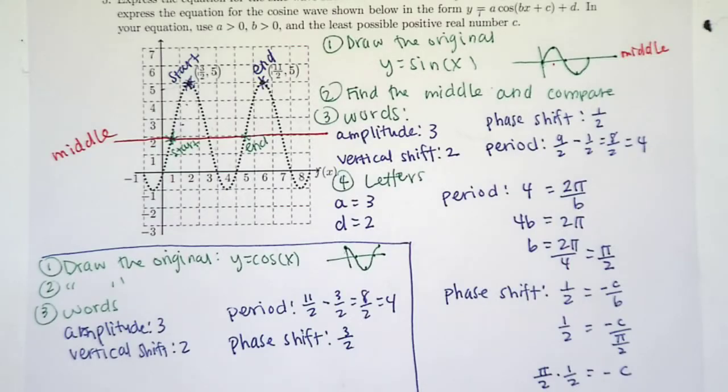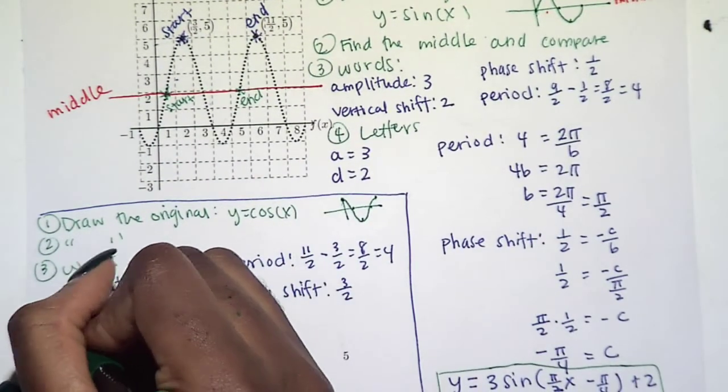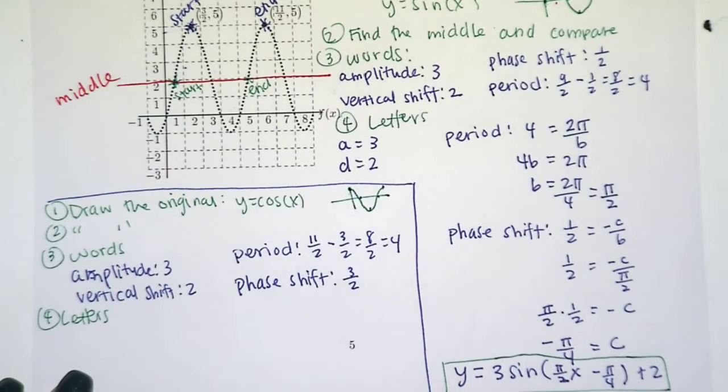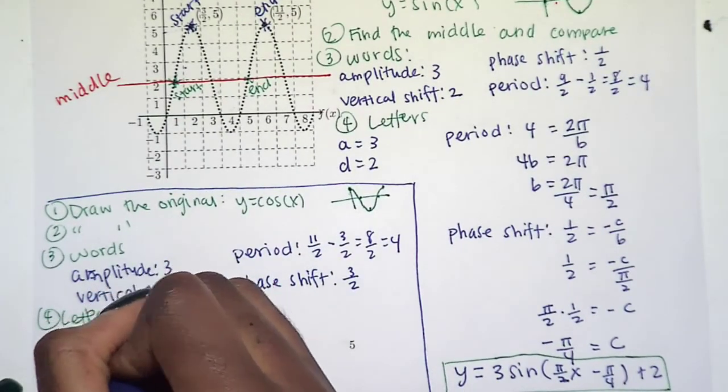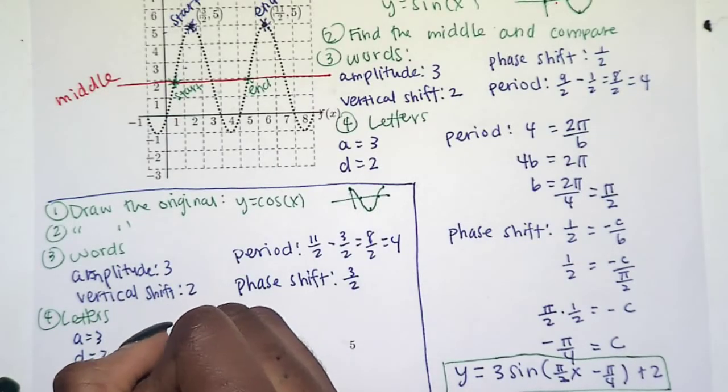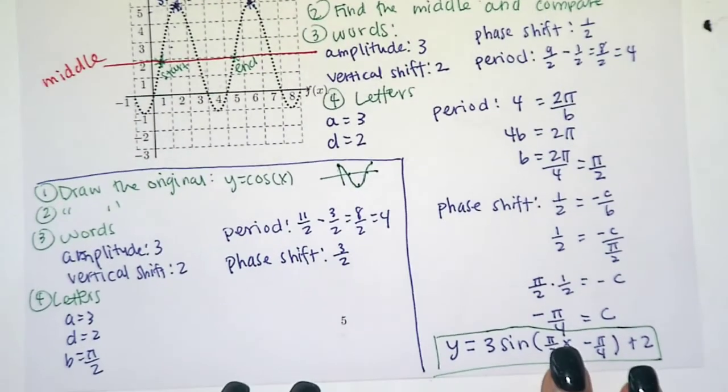All right, so since all of these are the same, all of our letters are going to be the same except C. All of the work should be exactly the same. So for our letters, A is 3, D is 2, and B is pi over 2. Exactly the same as what we got with sine.